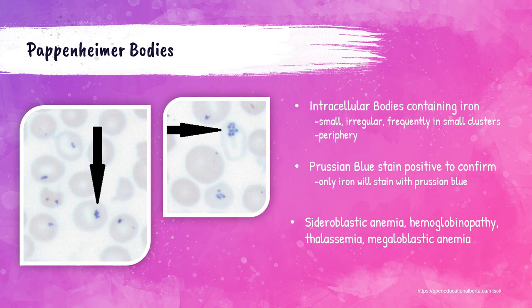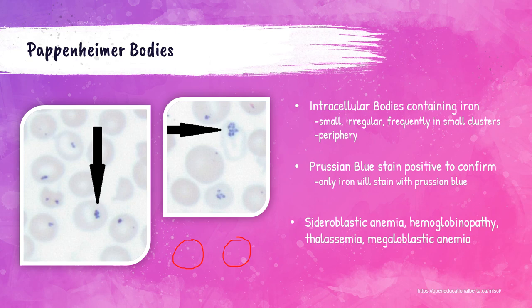Pappenheimer bodies are small, irregular iron granules that are frequently clumped together in the red blood cell. Pappenheimer bodies can be confirmed by staining the blood with a Prussian blue stain, since iron stains with this stain and Pappenheimers are granules of iron. These are seen in disorders like sideroblastic and megaloblastic anemias, hemoglobinopathies, and thalassemias. A lot of times students will get these confused with basophilic stippling — with basophilic stippling, the inclusions are all over and uniform throughout the red blood cell, whereas Pappenheimer bodies are just a couple clumped together to one side.